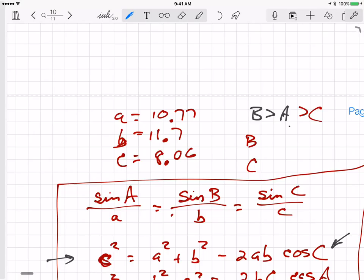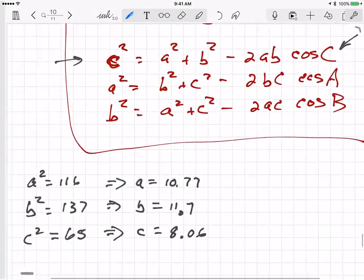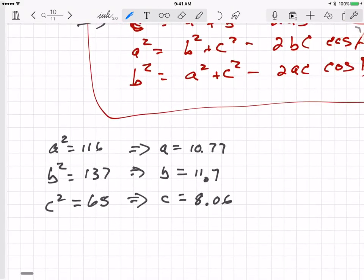So angle B must be greater than A, must be greater than C. And these are the lengths of the three sides, and we also have the lengths of the three sides squared. We have A squared is 116, B squared is 137, and C squared is 65.